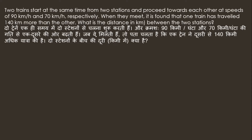First of all, let's say that we have two stations, and here is the distance between the two stations. One train started at the same time at 90 km per hour. Let's see what we can do here.